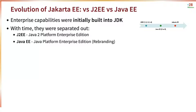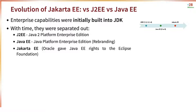Over time, J2EE became Java EE. This was a rebranding where J2EE was renamed to Java EE, the Java Platform Enterprise Edition. And over time, it became Jakarta EE. Oracle was the owner of Java EE and gave Java EE rights to the Eclipse Foundation. The Eclipse Foundation conducted a poll and renamed Java EE to Jakarta EE.